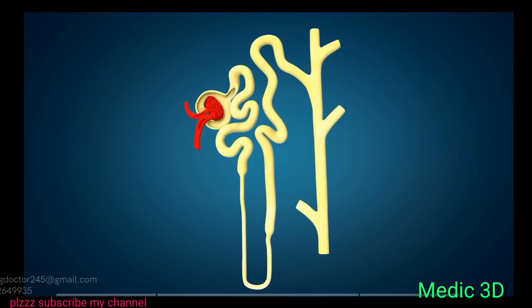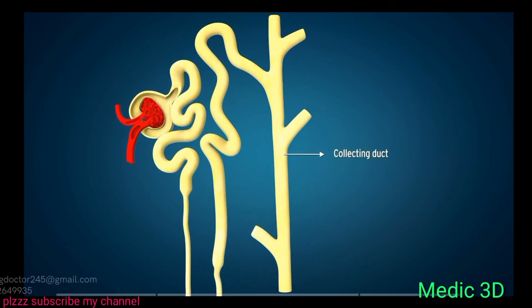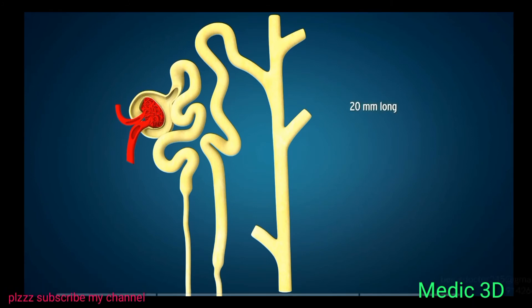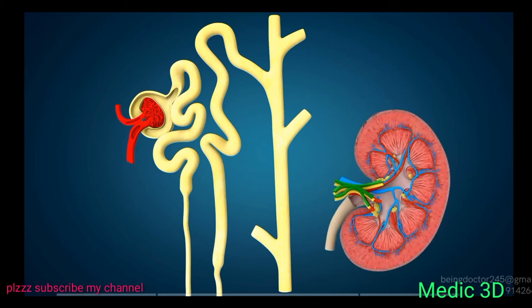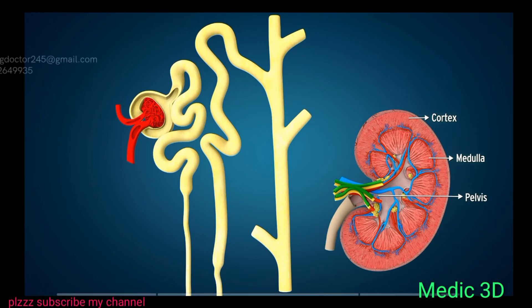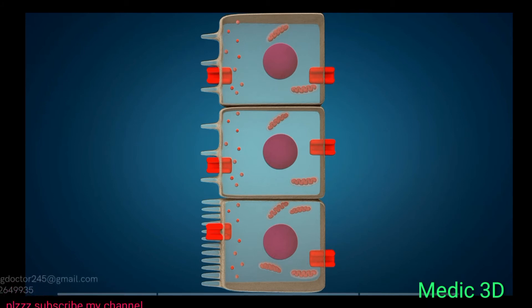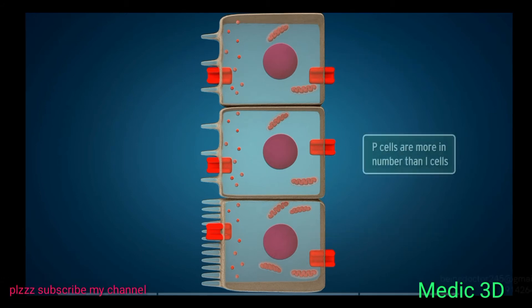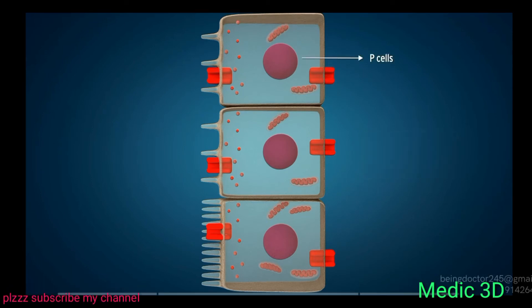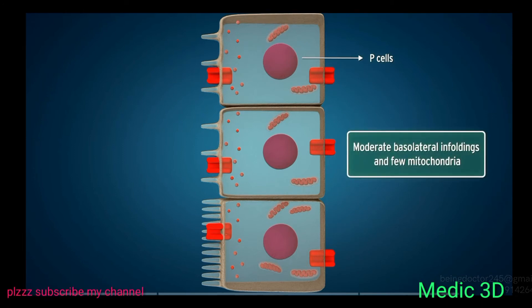Several DCTs empty into the collecting duct. The collecting duct is 20 mm long and lined by clear cuboidal epithelium. It passes through the cortex and medulla to empty into the pelvis of the kidney at the apex of the medullary pyramids. It is divided into two parts: cortical and medullary portions. The epithelial cells of the collecting duct are modified to participate in the transport of ions and water.